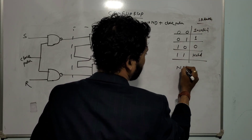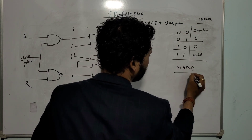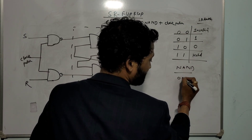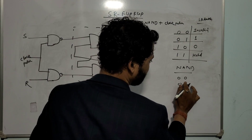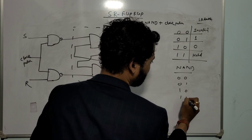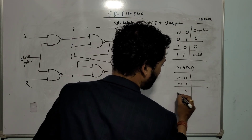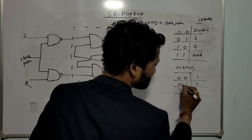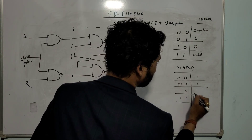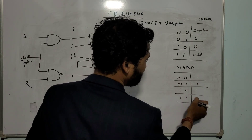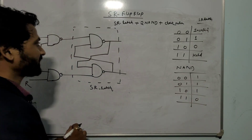Similarly, what is the NAND gate output? NAND gate: input 0,0 → output 1; input 0,1 → output 1; input 1,0 → output 1; input 1,1 → output 0. If any one of the inputs is 0, output is 1. That is the truth table of the NAND gate.